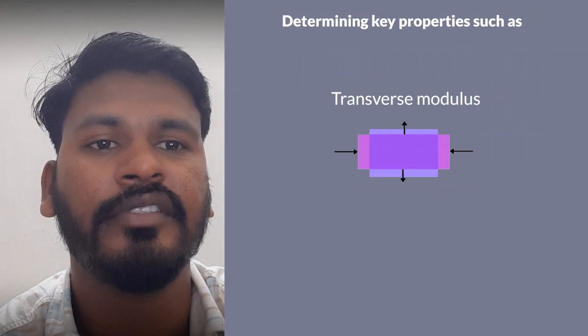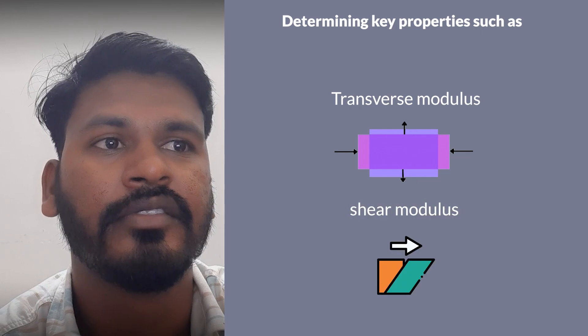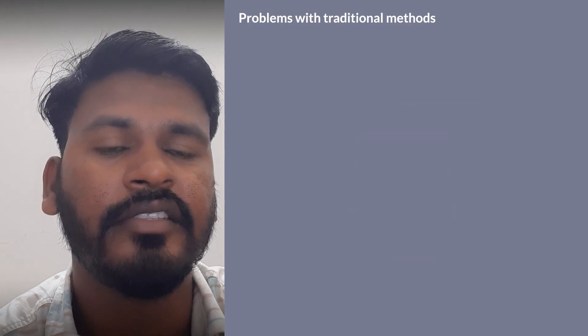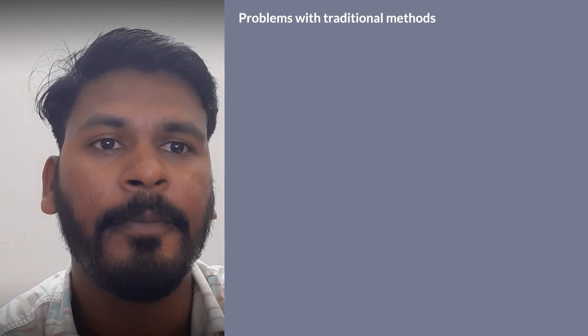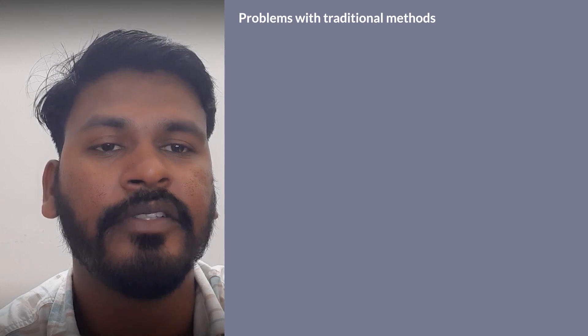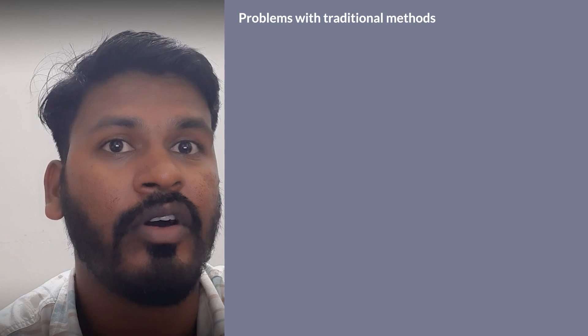But determining their key properties such as transverse and shear modulus has always been a complex task. Researchers have calculated fiber properties using inverse analytical expressions such as Halpin-Tsai, Chamis, or rule of mixture.